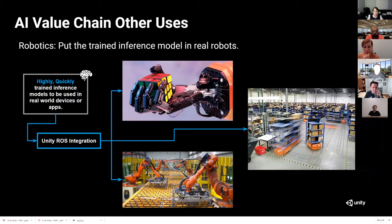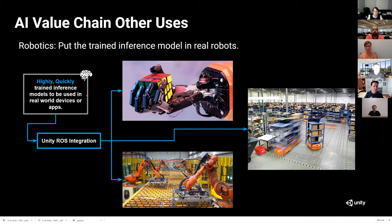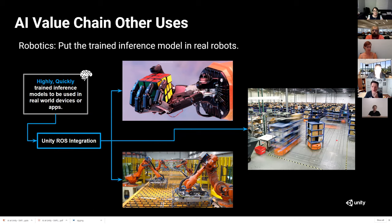Here's a robotics use case. The trained inference model — just a binary file — can be integrated with the Robot Operating System (ROS), which is common for these solutions. You take that inference file, the neural network file, and push it into humanoid robots, pick-and-place robots, welding robots, or even sled robots. There's a real-world scenario where robots can be so much more accurate when trained with a synthetic solution that scales.